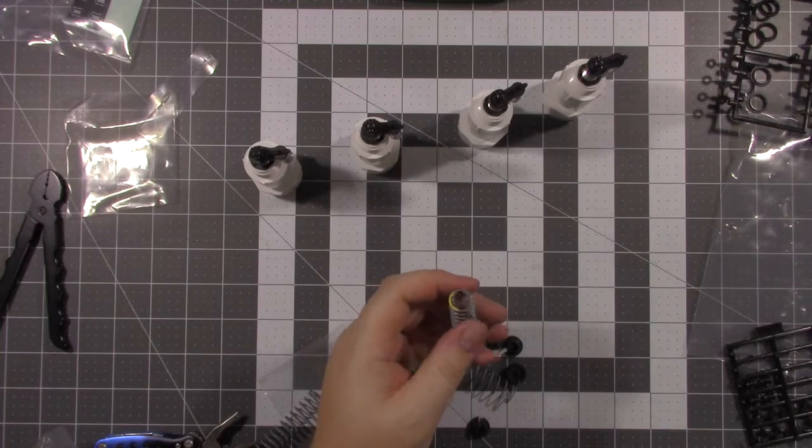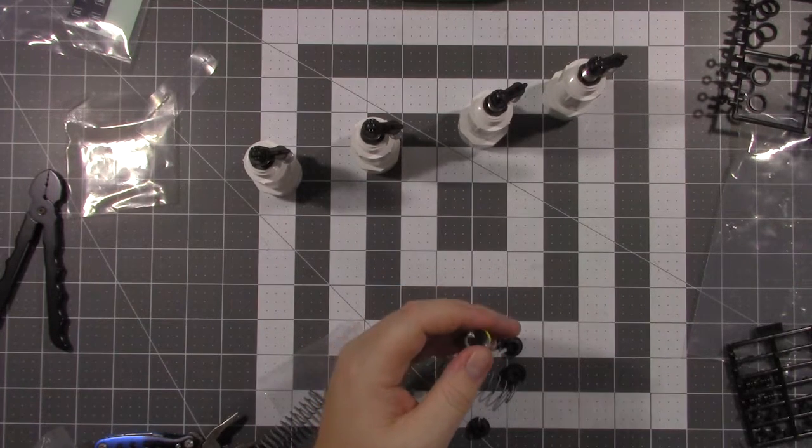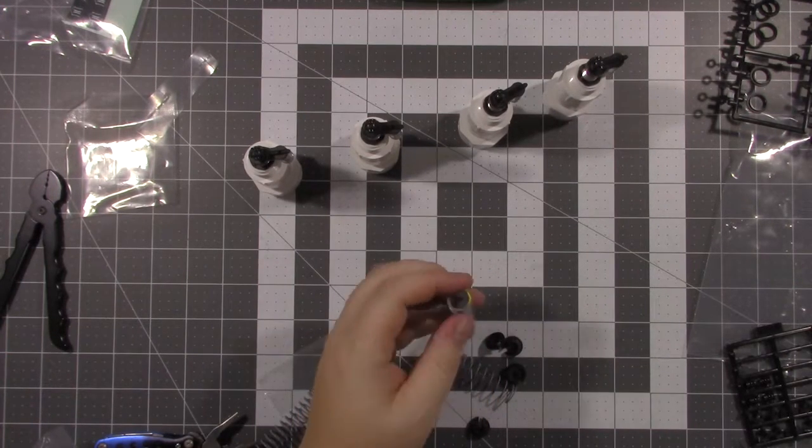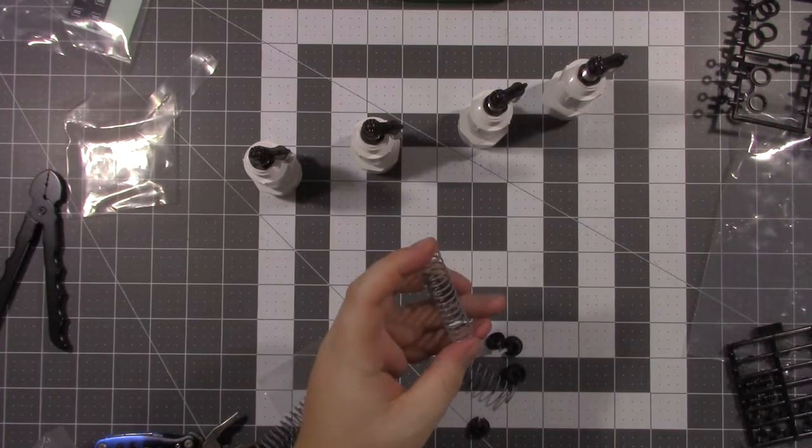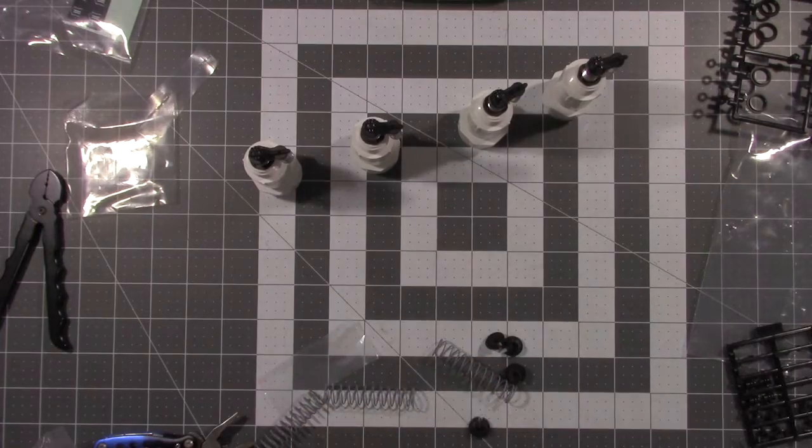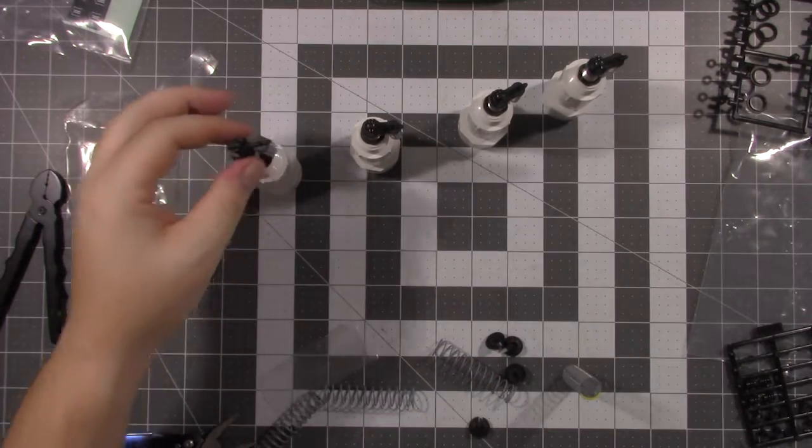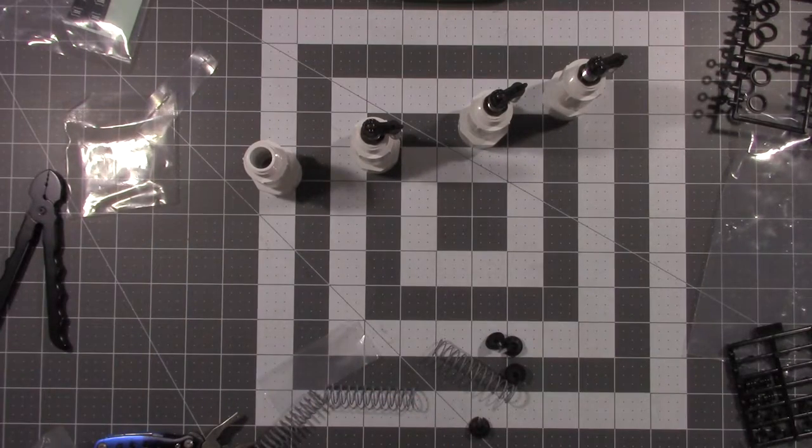And then you have the yellow which is for the front shocks and it is a 2.63 pound spring. So make sure you keep track of which shock is which once you put it all together.